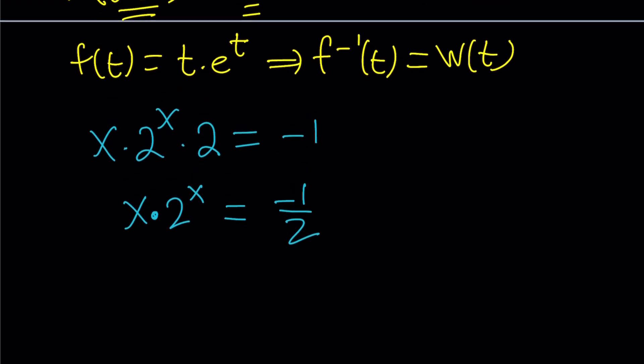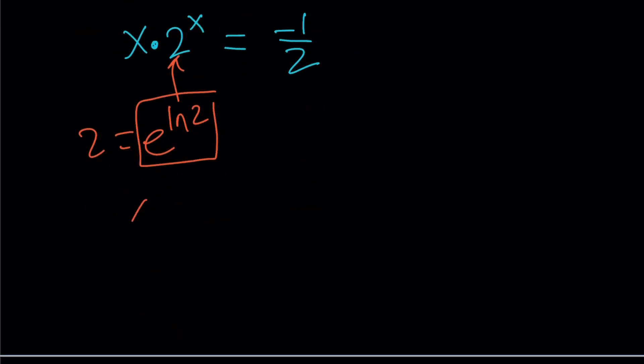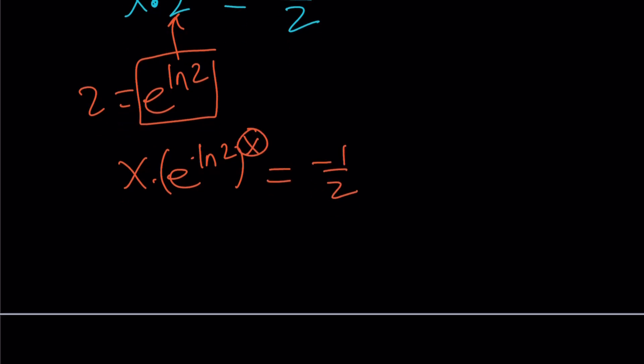I can basically use an identity, because e to the exponential function and the natural log function are inverse functions. So I can replace the 2 with e to the power ln 2. x times e to the power ln 2 to the power x equals negative 1 half. This x will be multiplied by the other exponents, so it's going to be x times e to the power x ln 2 equals negative 1 half.